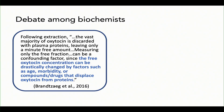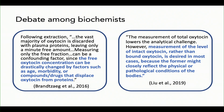Even biochemists working on mass spec techniques are grappling with this. One recent paper states that free oxytocin concentration can be drastically changed by factors like age, morbidity, and compounds that displace oxytocin from proteins. Another group responded with a different technique saying measurement of intact rather than bound oxytocin is desired in most cases because the former might closely reflect the physical and pathological conditions of the body. They're basically saying the same thing as justification for opposite approaches.